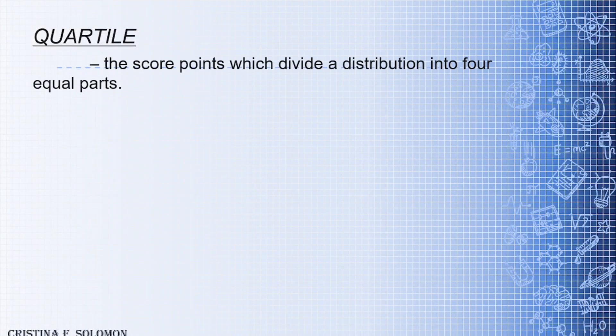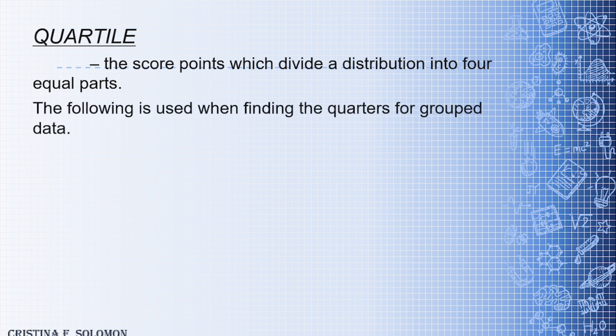First, let's talk about quartile. Quartiles are the score points which divide a distribution into four equal parts. Quartile came from the word 'quart,' which means four. The following formula is used when finding the quartiles for grouped data: QK = LB + ((N/4 − less than CFP) / FK) × CI.